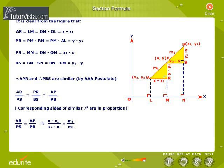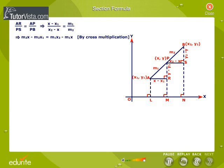AR by PS is equal to AP by PB, which implies that X minus X1 by X2 minus X is equal to M1 by M2. By cross multiplication, M2X minus M2X1 is equal to M1X2 minus M1X. By solving this equation, we get X is equal to M1X2 plus M2X1 by M1 plus M2.